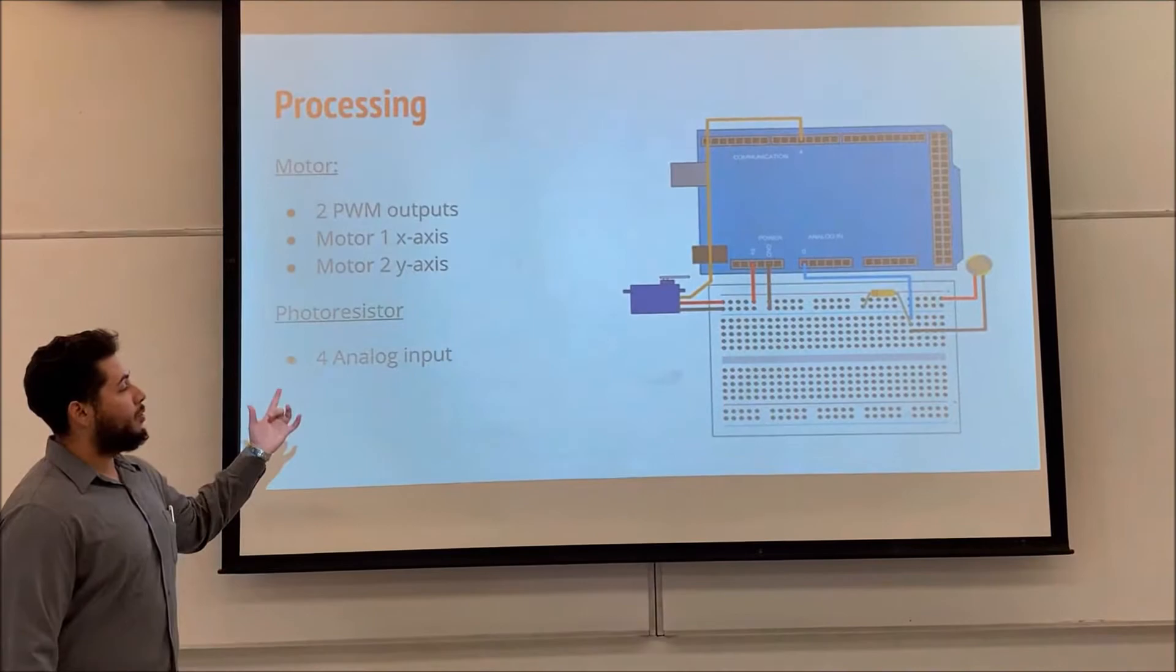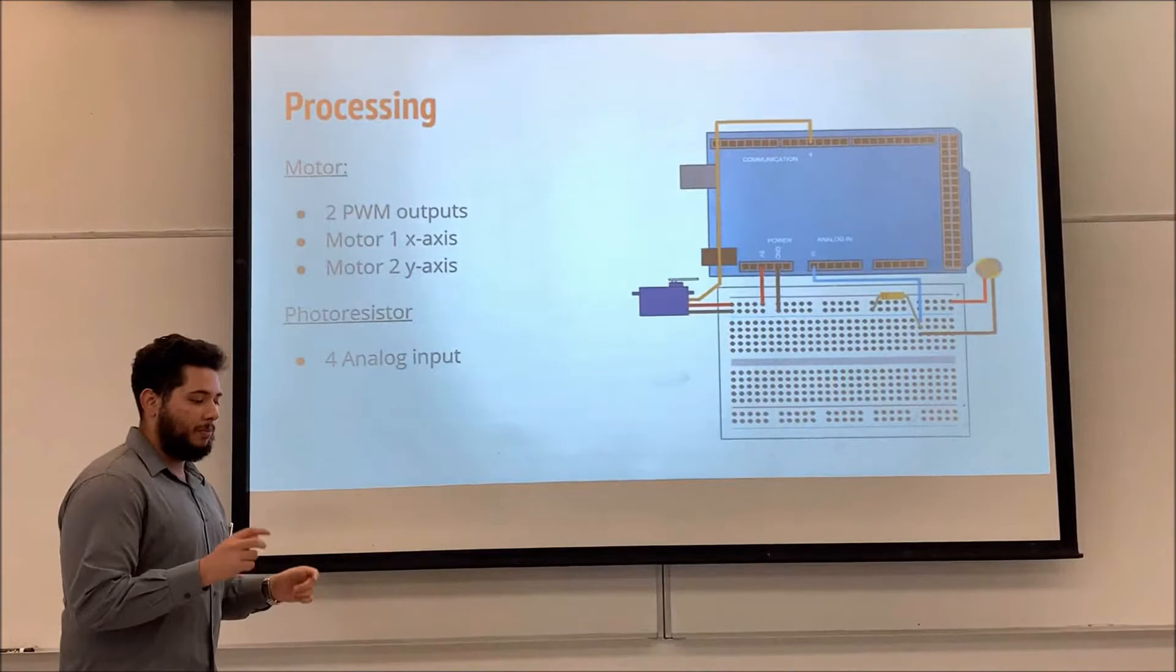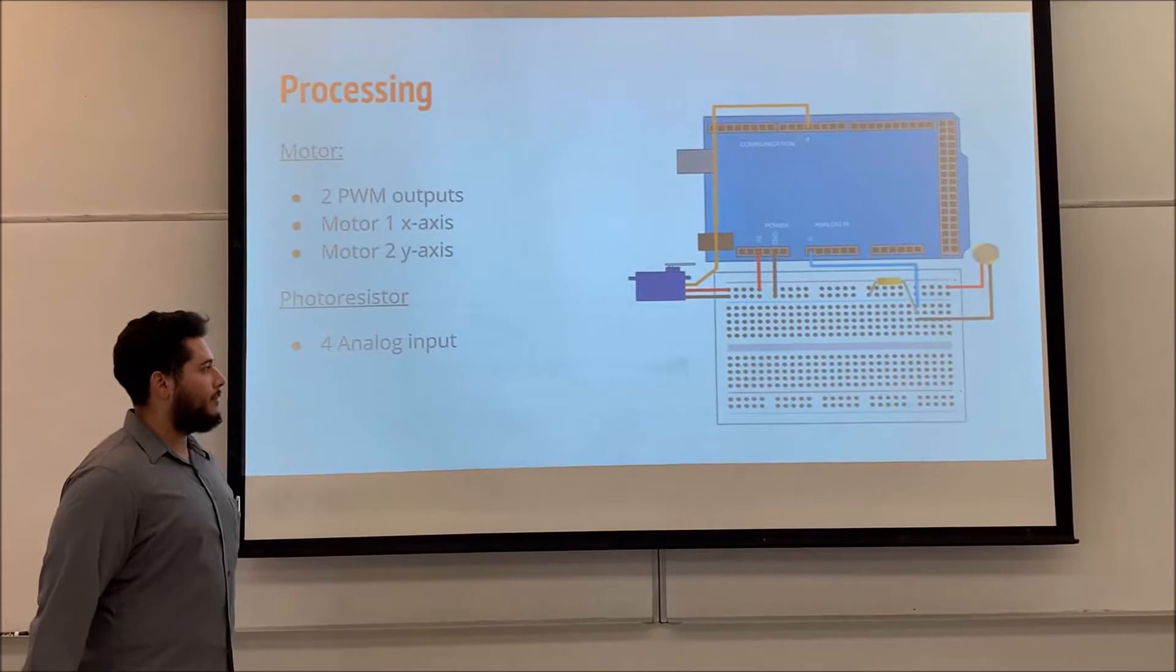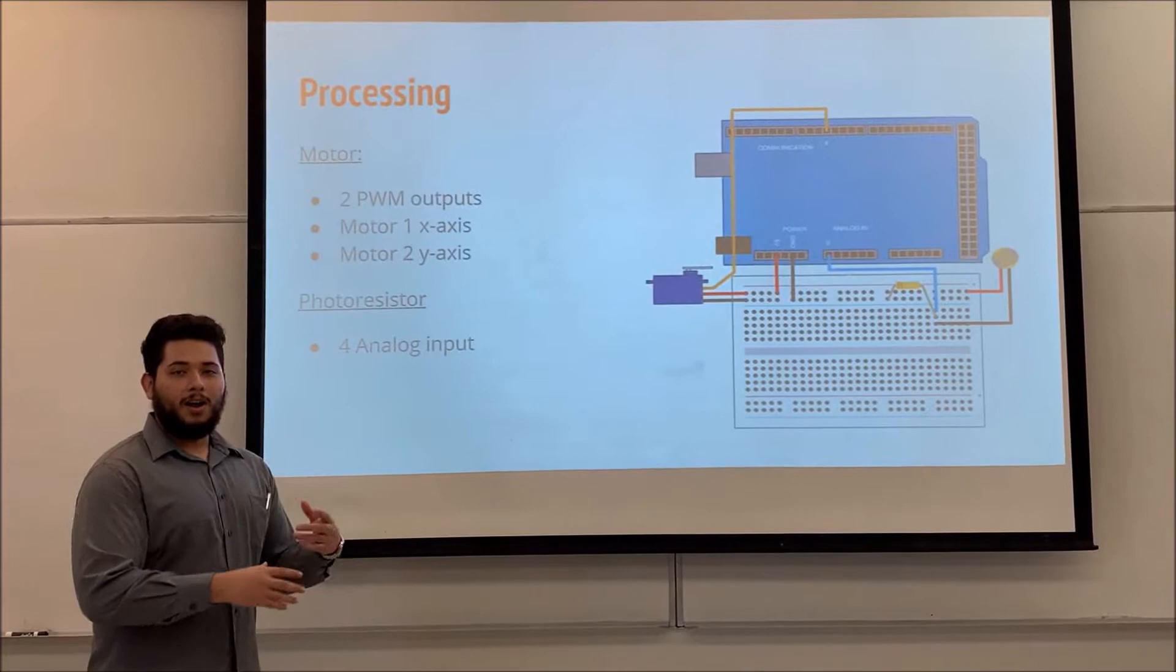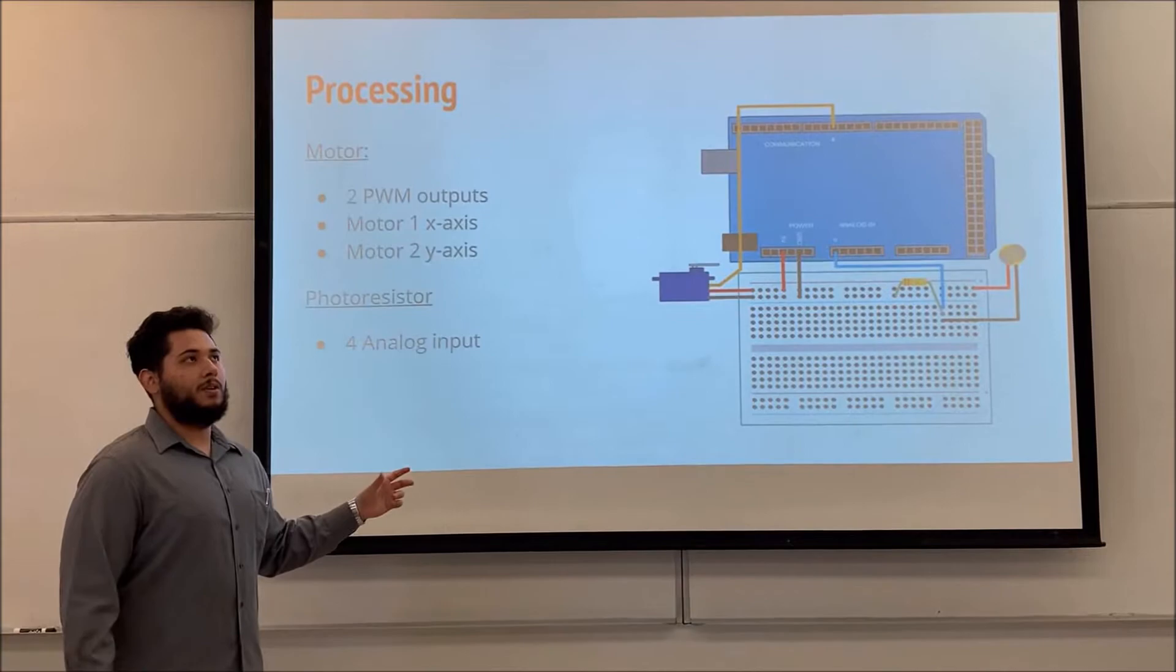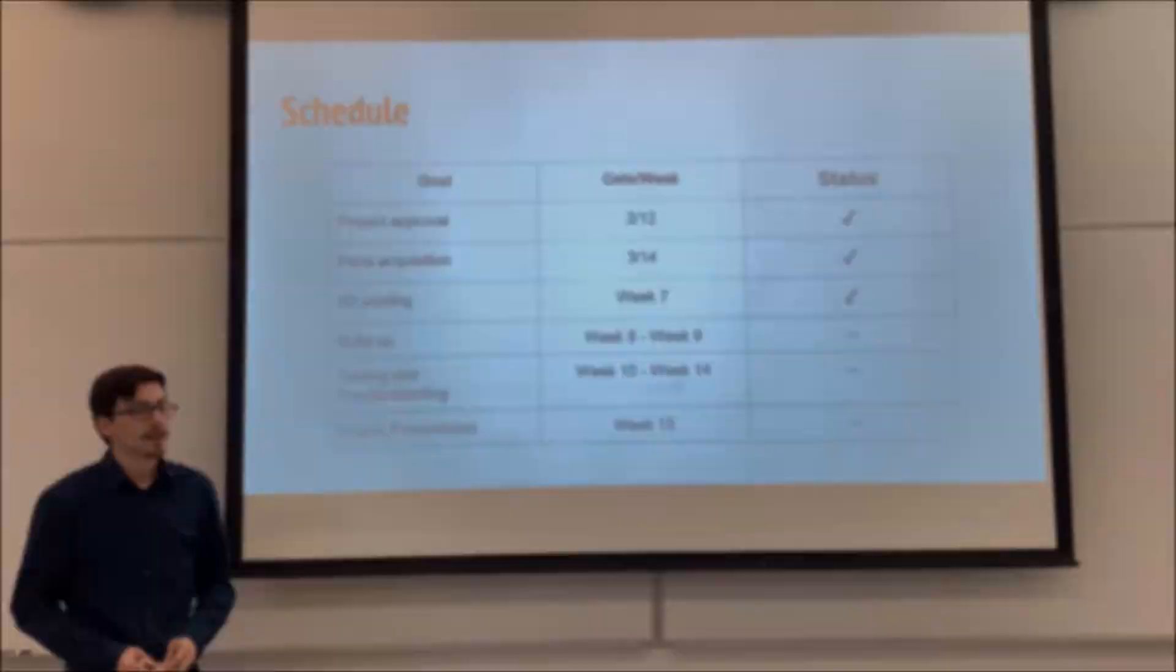For the processing part, we're going to be using a nucleo. For the two motors, we're going to be connected to the PWM nucleo panels. And then we're going to have four analog inputs for each of the motor resistors. So they can all communicate together in order to reposition the solar panel in order for it to rotate on the x and y-axis. Mainly, we're still trying to set up and configure it on Simulink in order for it to run well.